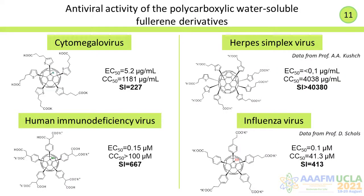Biological activity of the synthesized compounds was studied by our colleagues from Gamaleya Institute, Research Center for Medical Genetics in Moscow, Catholic University of Leuven, and National Taiwan University. Three parameters were used to compare antiviral activity: effective concentration EC50, which is the concentration of compound that inhibits the cytopathogenic effect of virus in cells by 50%; and cytotoxic concentration CC50, defined as the compound concentration required for reduction of cell viability by 50%.